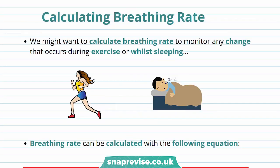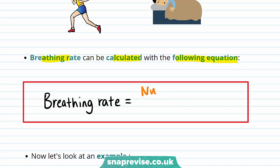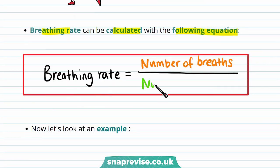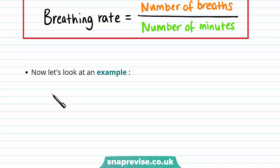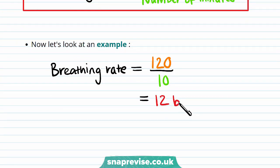We may also have to calculate the breathing rate, for example to monitor changes during exercise or while sleeping, as your breathing rate changes during these activities. The equation is: breathing rate equals the number of breaths divided by the number of minutes. For example, someone who takes 120 breaths in 10 minutes has a breathing rate of 120 divided by 10, which equals 12 breaths per minute.